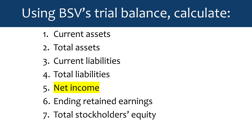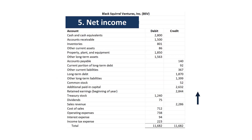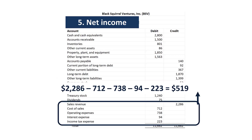Next up, we get net income. Net income takes a little more work. What we're going to do is take sales revenue, then subtract cost of sales, subtract operating expenses, subtract interest expense, and subtract income tax expense. We can see that because they're on opposite sides of the trial balance columns.